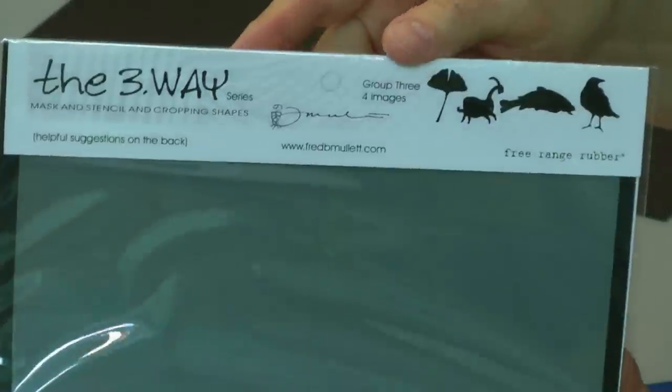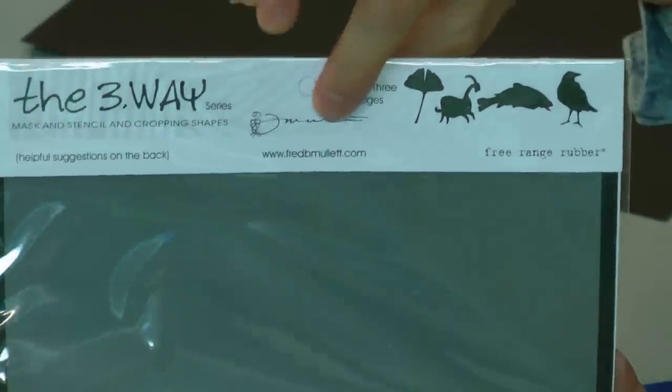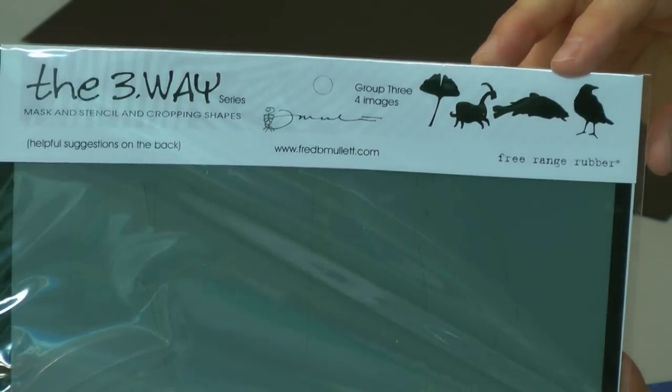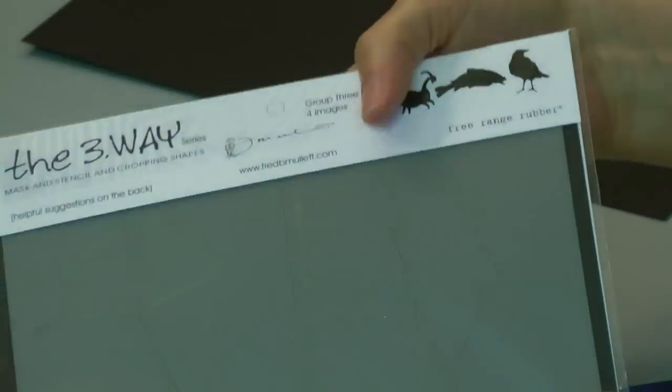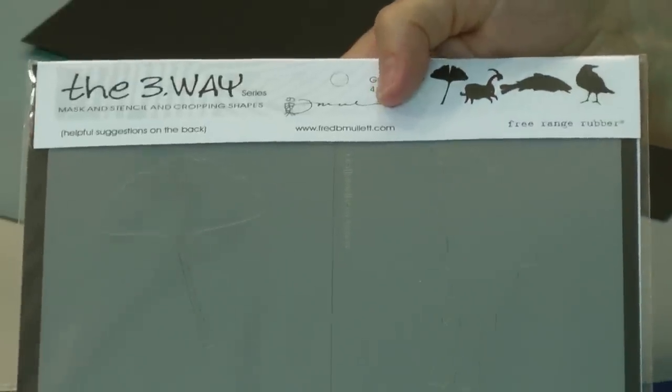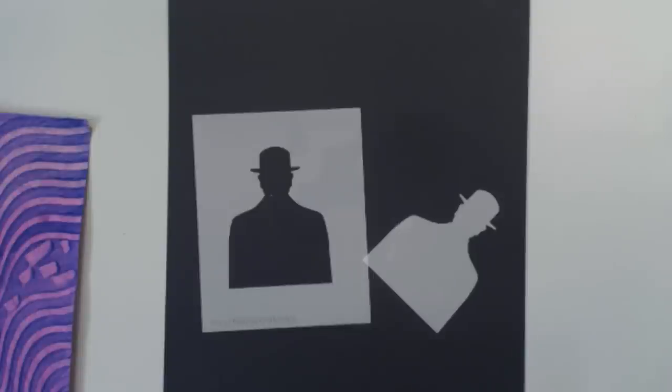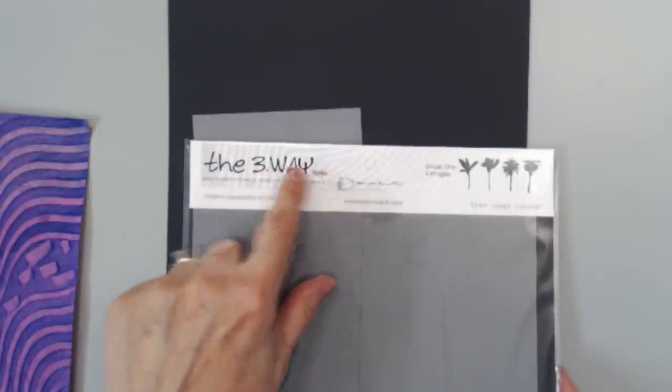Here's another company that you might not be familiar with. I'm going to show it to you over here. This is the Fred Mullet Company. You can see the name right here, fredbmulletcompany.com. And these are four individual stencils and masks, and that's how his are packaged. So I want to show you kind of one of the cool things about how you can use those.